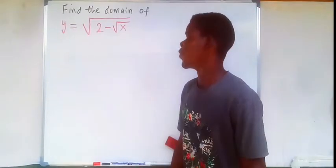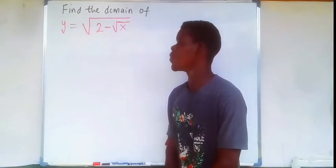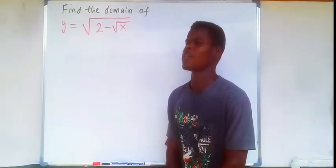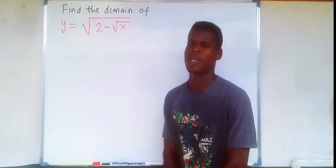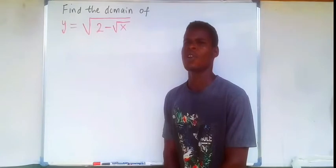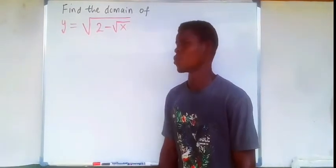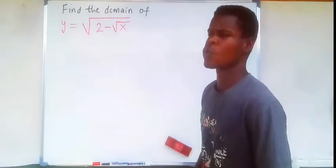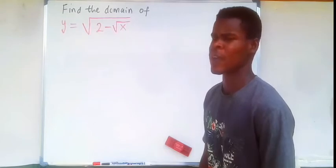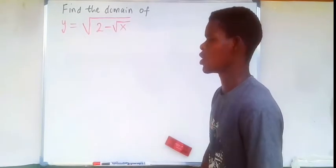Here we want to find the domain of the function y equals the square root of 2 minus the square root of x. The domain of a function is all possible numbers for which the function will be defined — every number that makes the function undefined on the set of real numbers is not in the domain.